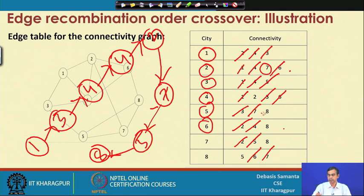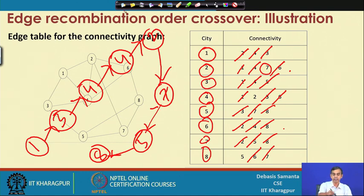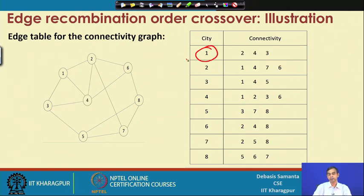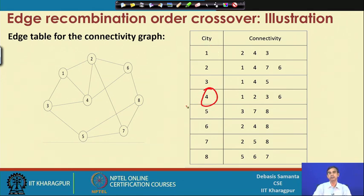The total tour is completed covering all cities. We started with the starting city of P1. If we follow the starting city of P2 (say city 4), it will produce a different chromosome, which is considered C2. This way, P1 and P2 chromosomes influence the generation of two children solutions C1 and C2 according to the edge recombination technique.